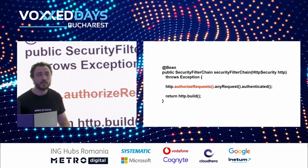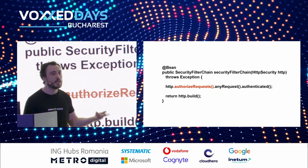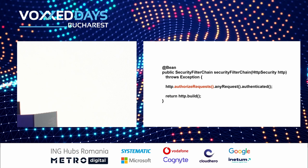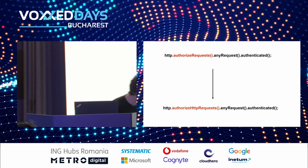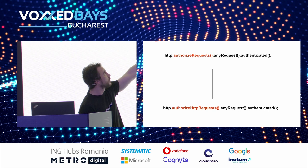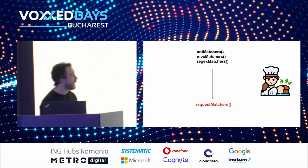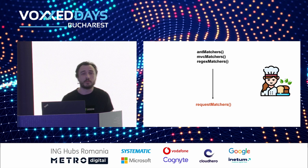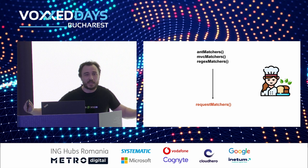With taking this out and having only one method, we actually take out all the confusion. The fact that we quit using mvcMatchers, antMatchers, and regexMatchers is a good point. The authorizeRequests is not available anymore — you change it with authorizeHttpRequests. And as previously mentioned, you can't use antMatchers, mvcMatchers, or regexMatchers anymore. You will replace everything with requestMatchers, which is the only method. So now you can't make a mistake — you only have one choice.